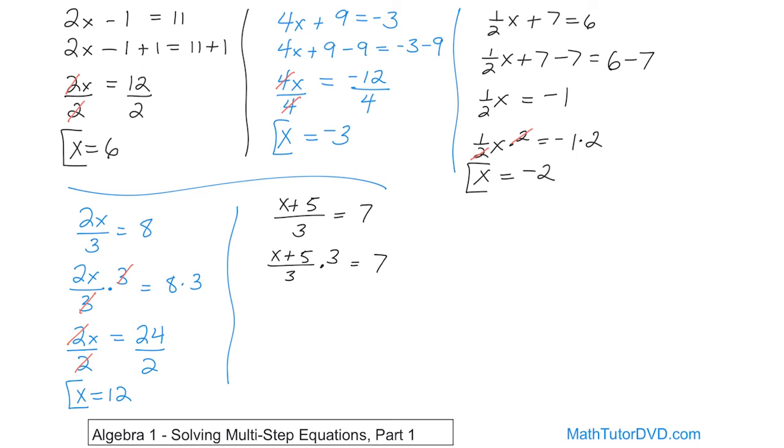We multiply by 3 on the left and 3 on the right, because now we have a 3 on top and a 3 on bottom that cancel. And so on the left-hand side, all we have is x plus 5, and on the right-hand side, we have 21.